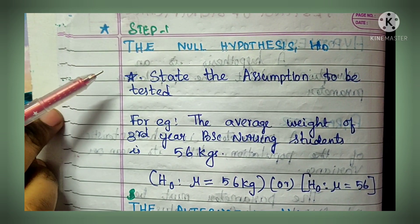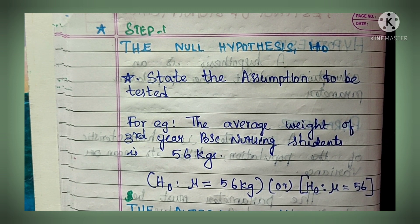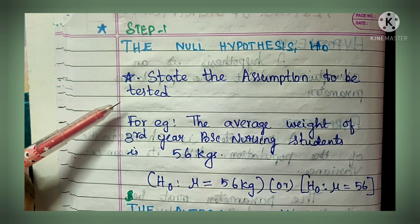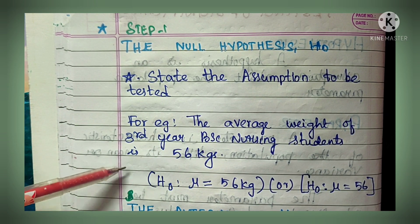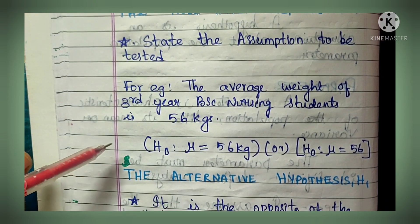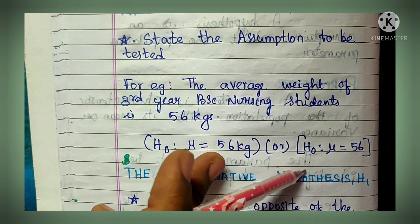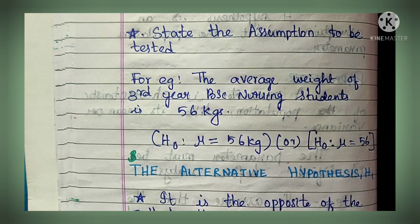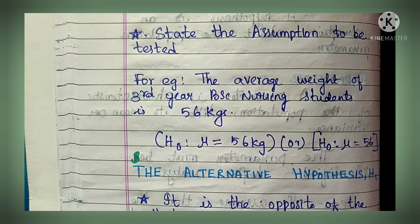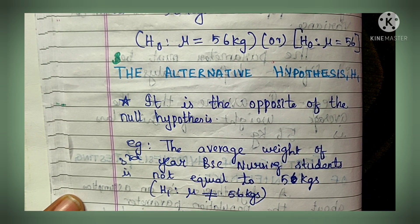Step one - the null hypothesis, represented as H0. You state the assumption to be tested. For example, we assume the average weight of third year BSc Nursing students is 56 kg. You formulate the null hypothesis as: H0: μ = 56 kg. The alternative hypothesis is just the opposite of the null hypothesis.